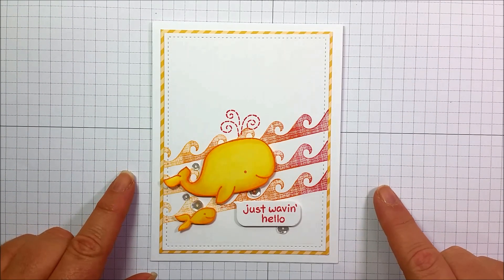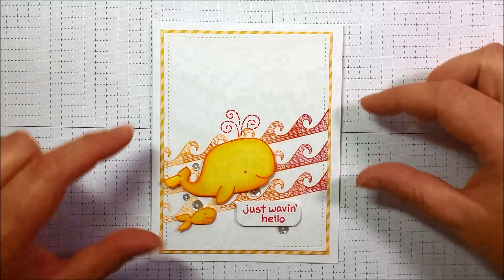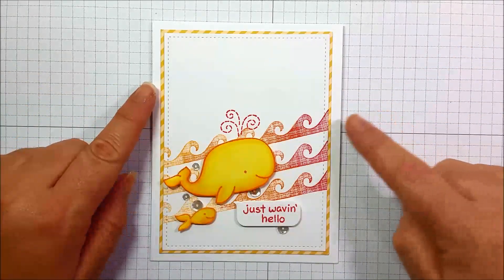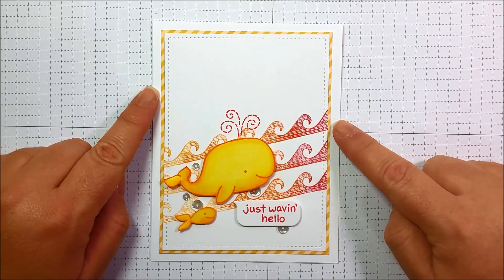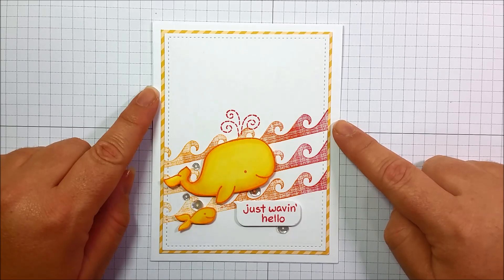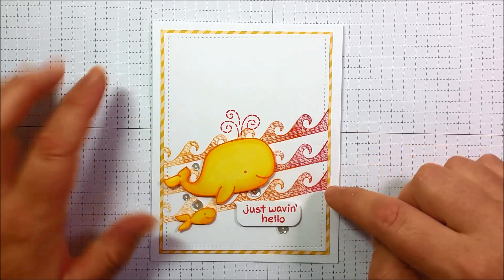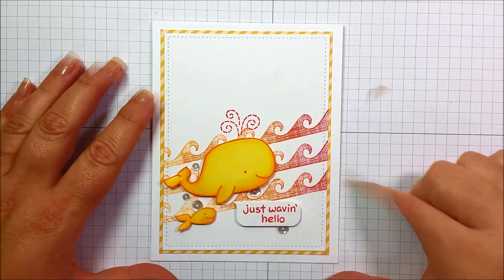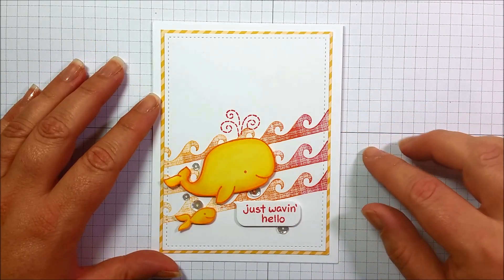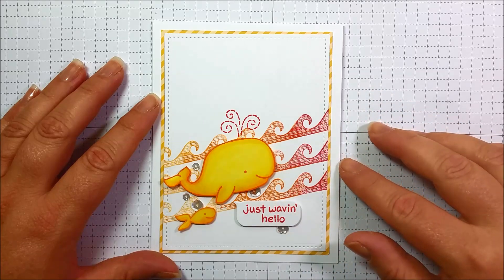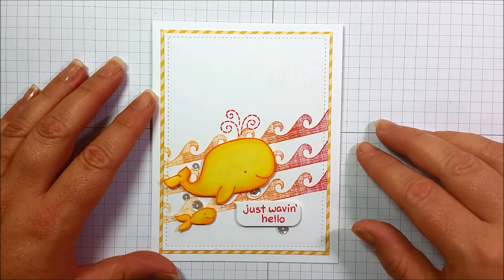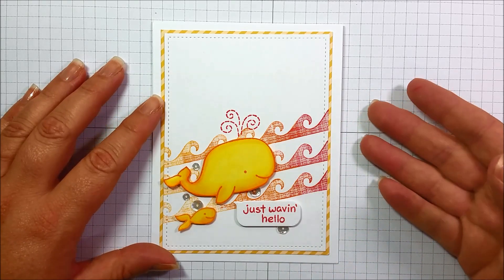So I'm back with our final three cards. For our first card where we stamped our gradient waves, I did it up and I added a couple of little critters and a simple sentiment. Don't be afraid to change up your stamp sets and mix and match things to create the look that you are looking for. Simple and cute.